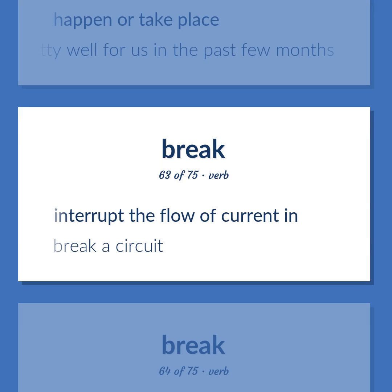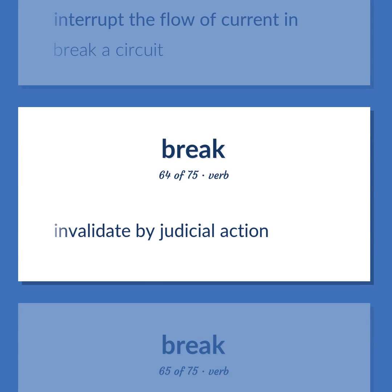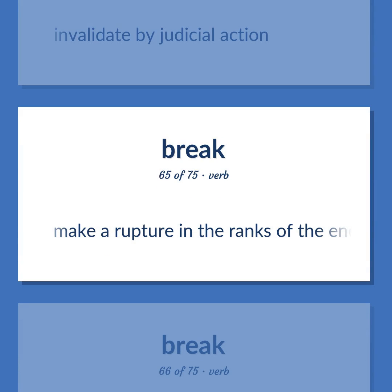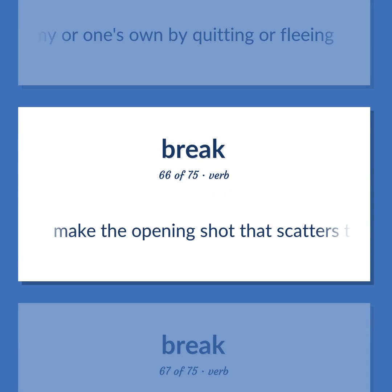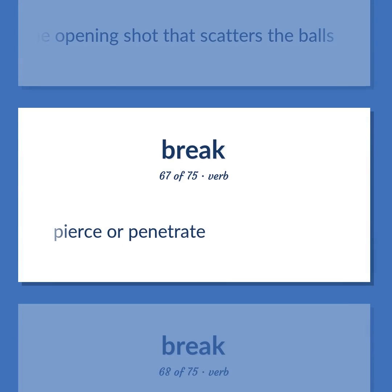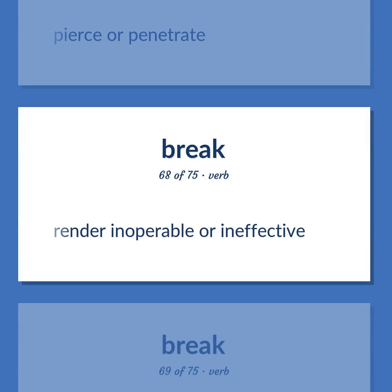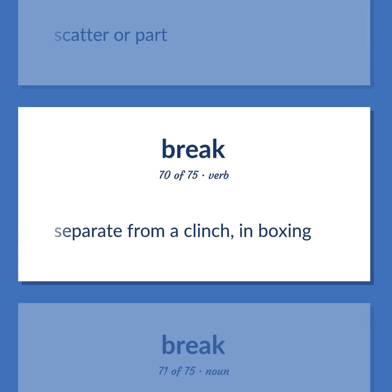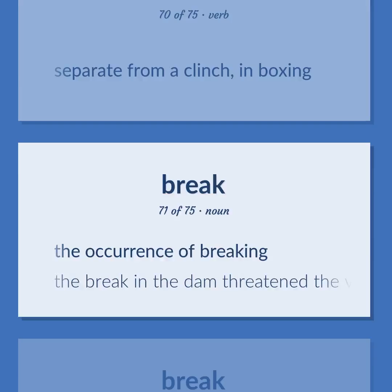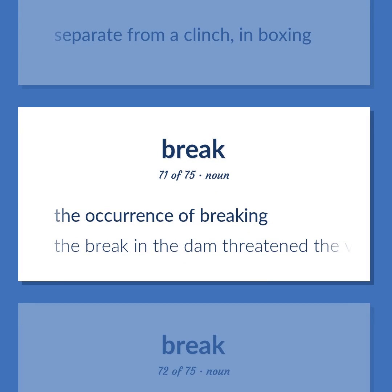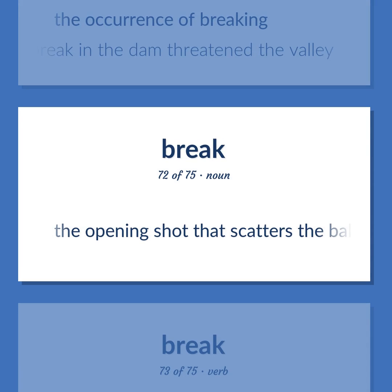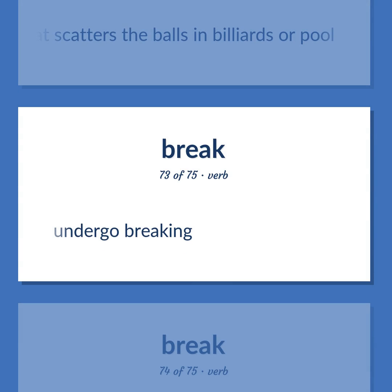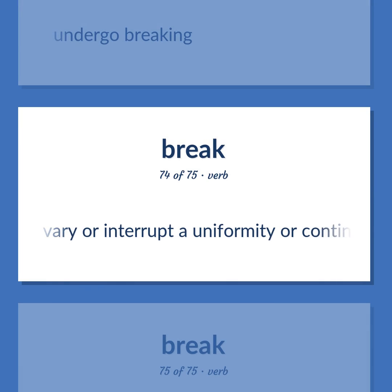Interrupt the flow of current in — break a circuit. Invalidate by judicial action. Make a rupture in the ranks of the enemy or one's own by quitting or fleeing. Make the opening shot that scatters the balls. Pierce or penetrate. Render inoperable or ineffective. Scatter or part. Separate from a clinch, in boxing. The occurrence of breaking — the break in the dam threatened the valley. The opening shot that scatters the balls in billiards or pool. Undergo breaking. Vary or interrupt a uniformity or continuity. Weaken or destroy in spirit or body.